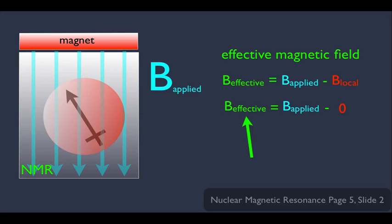That means that in this particular case, B effective must be a large number because we're taking the B applied and we're not subtracting anything from it. We can say this deshielded nucleus has a very high B effective.